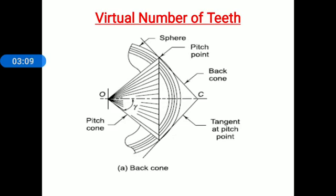Remember: that approximation is called Tregold's approximation — that question is also asked for one mark in multiple choice questions. Now observe figure A. The tangent to the sphere at the pitch point will closely approximate the surface of the sphere for a short distance on either side of the pitch point. Therefore, the back cone can be developed as a plain surface for constructing a spur gear.